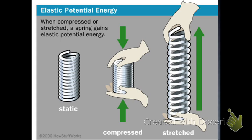Spring potential energy, or elastic potential energy, is the stored energy within the spring. When we stretch or compress a spring, we're able to store energy into it. If I compress a spring and then let go, it bounces back and forth until it eventually reaches what's called equilibrium. For a spring to be static means it's not stretched or compressed — it's just at its most relaxed state.